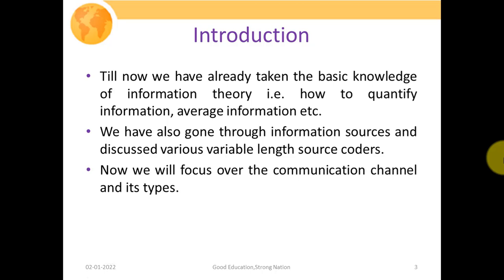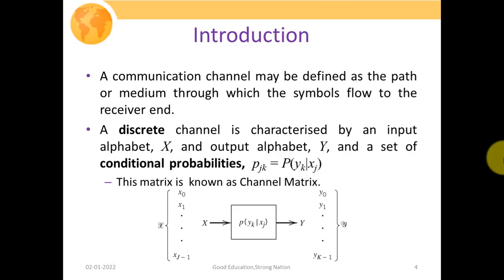If you closely observe, there are three basic ingredients of any communication system: your source, destination or receiver, and to interconnect between source and receiver, we have a physical medium — the channel. Our focus in this lecture is solely on the channel. A communication channel may be defined as the path or medium through which symbols flow to the receiving end — the physical medium between transmitter and receiver through which information symbols flow from source to destination.